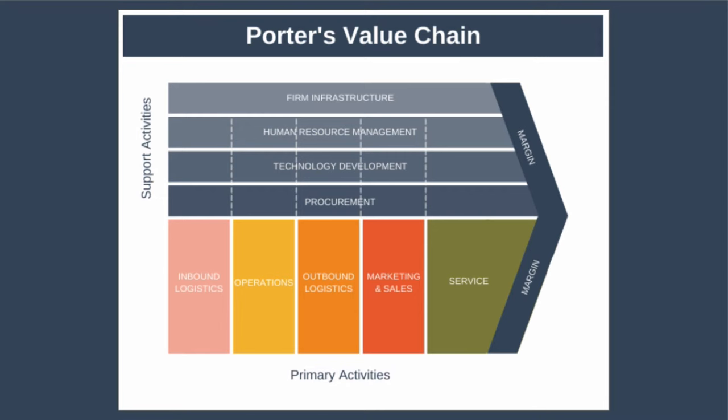Now let's take a look at support activities. As we said, support activities support your primary activities to run smoothly. The dotted lines you can see in the diagram show that support activities can help a specific primary activity and also play a role across all primary activities. For example, human resources management supports marketing and sales, but it could also support logistics.